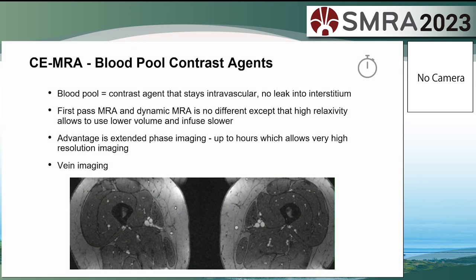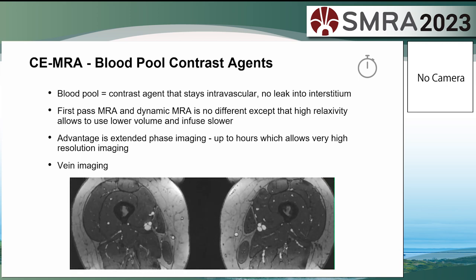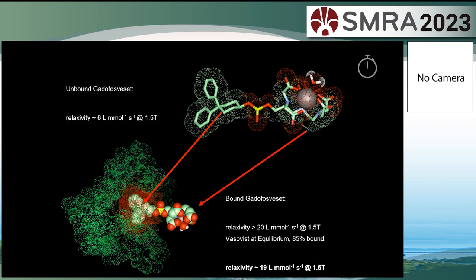The next part of the history of CE-MRA was the introduction of blood pool contrast agents with the commercialisation of gadafosveset — an agent that stays in the blood pool longer with no leak into the interstitium. For first-pass and dynamic MRA it works like normal gadolinium agents, but the advantage was extended phase imaging where contrast remains in arteries and veins in equal concentration for hours. This opened up high-spatial-resolution venous imaging. Unfortunately, the commercialisation failed — the company didn't make enough money and it was taken off the market.